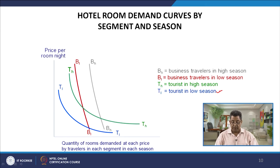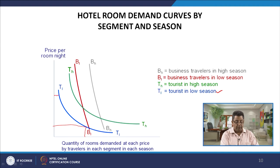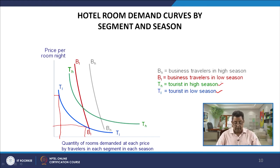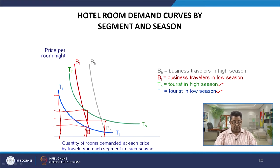Starting with T1 — tourists in low season — represented by the blue curve: as prices are reduced, quantity demanded increases, and as price increases, quantity demanded comes down. For TH — tourists in high season — represented by the green curve: in high season, at a given price the quantity demanded is higher, and the rate of change differs across all these graphs.